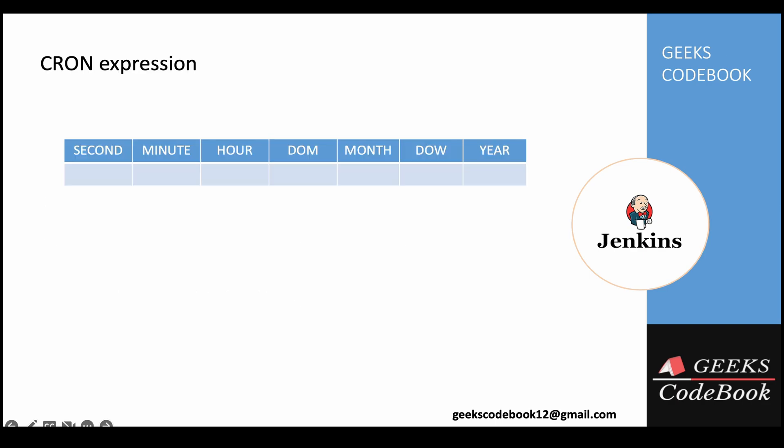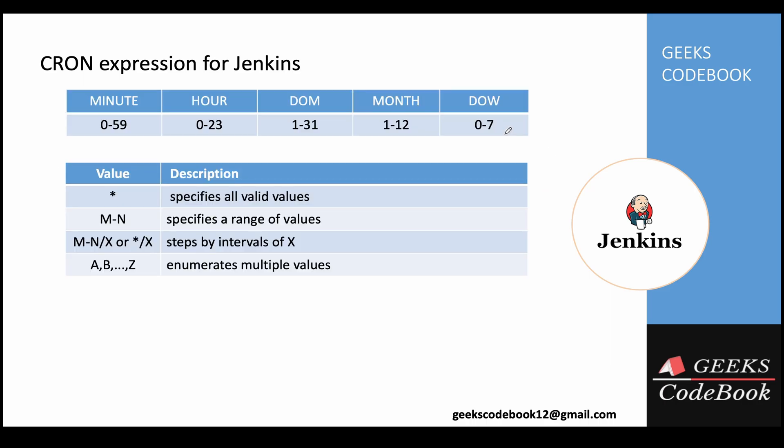If you know about the cron expression, it has seven parts or seven fields: second, minute, hour, day of month, month, day of week, and year. But your Jenkins job is not executed at every second, so we modified this expression a bit. We use five sections — removing the first and last sections.